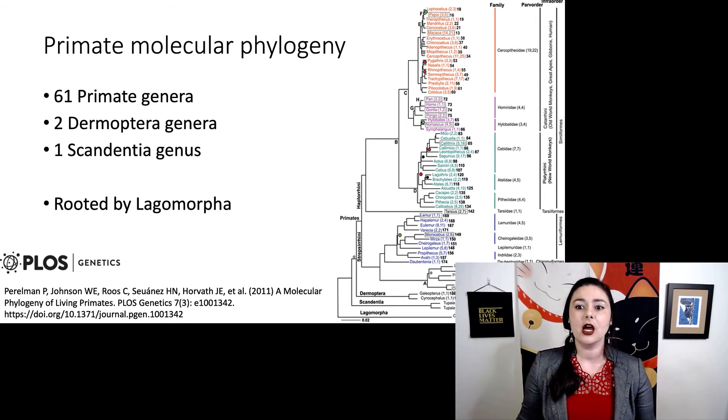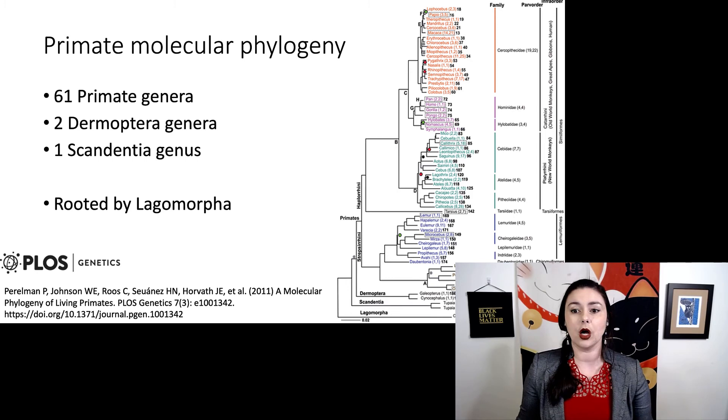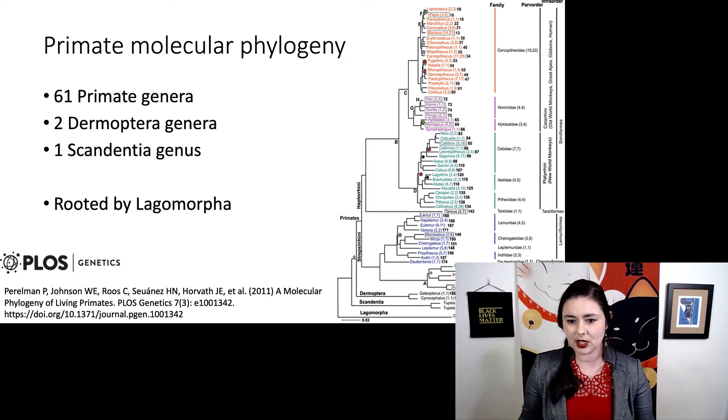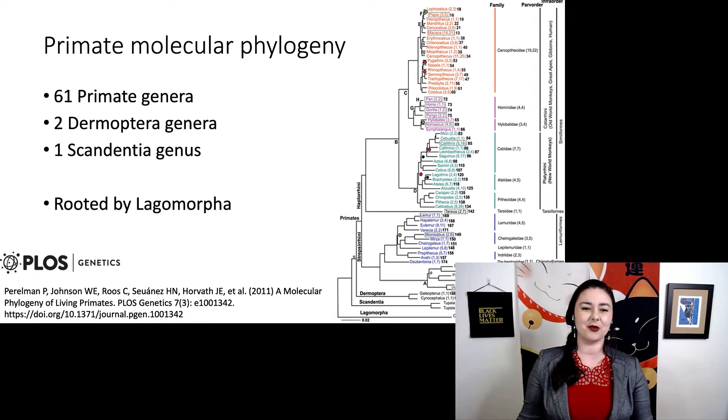So up at the top, we have our cercopithecoids or old world monkeys in orange. Then we have our hominoids or apes in kind of that light purple, pinkish color. And then in teal, those are our new world monkeys. In blue, those are our lemurs. And then in kind of that olive, green, brown, those are our lorises, and then everybody else who is outside of primates, that's kind of in that black or gray right at the bottom there.